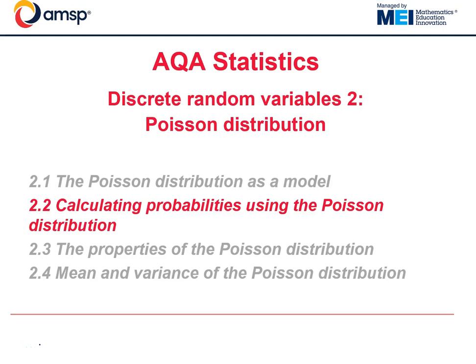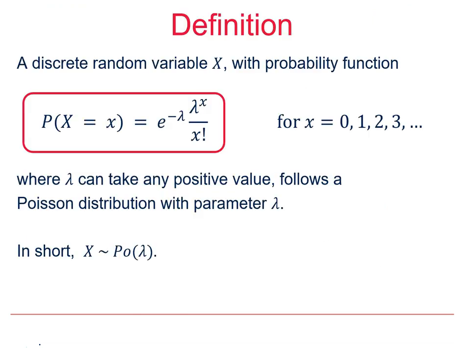Hello and welcome to this AQA Further Math Statistics video on discrete random variables, the second in the series looking at the Poisson distribution. Using the definition of the probability function for the Poisson distribution that you met in the previous video, remember that lambda is the Poisson parameter and that the outcomes possible are discrete with an infinite number of possible outcomes. Also remember the short quick way that we describe a random variable that follows a Poisson distribution with parameter lambda.